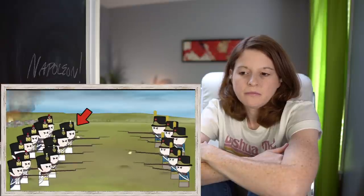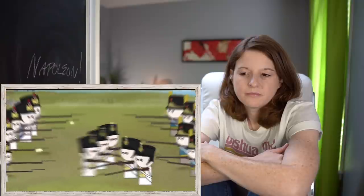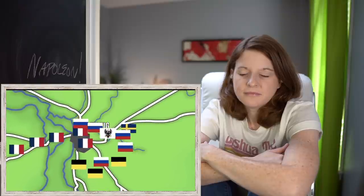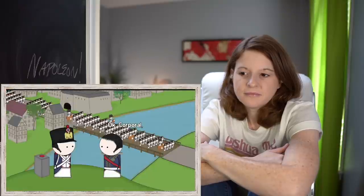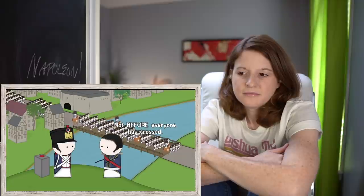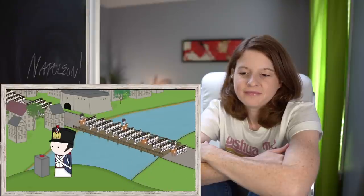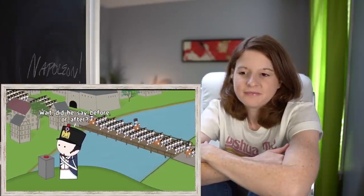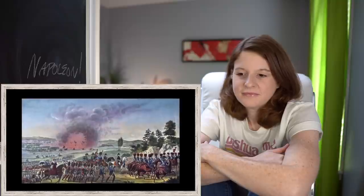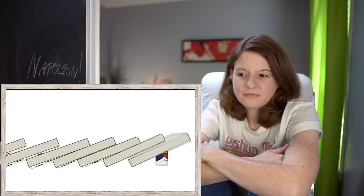At one point in the midst of battle, Saxon troops allied with the French decided to switch sides. When it became clear Napoleon couldn't win, he ordered a retreat across the only bridge over the river. A corporal was told to blow the bridge only after everyone had crossed, but blew it early — 30,000 French troops were stranded and captured. A disaster. With that, the dominoes were beginning to come crashing down on Napoleon.